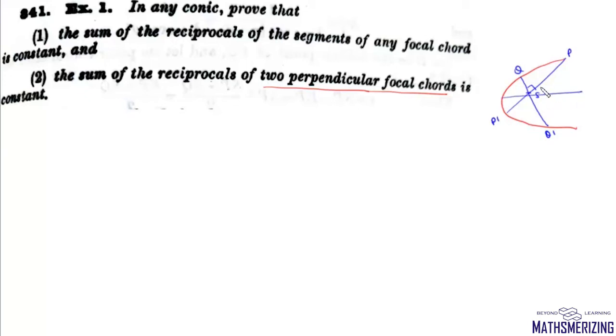Now we will prove the second result: the sum of reciprocals of two perpendicular focal chords is constant. We have any conic section with two perpendicular focal chords through focus S. Call the endpoints P, P' and Q, Q', and let the angle be θ. The segment lengths are R1, R2 for chord PP' and R3, R4 for chord QQ'.